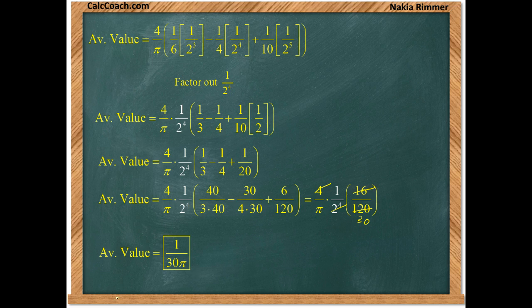The common denominator between three, four, and twenty is one hundred and twenty. So we'll multiply the first fraction by forty, second fraction by thirty, third fraction by six.